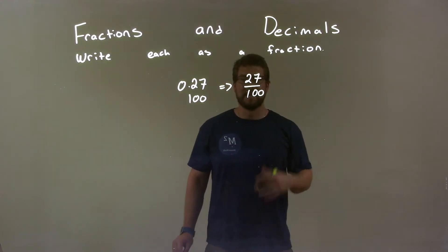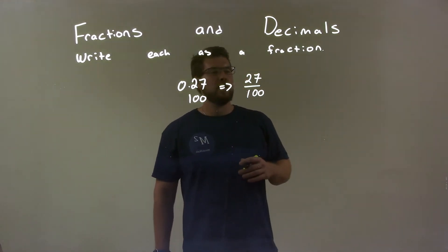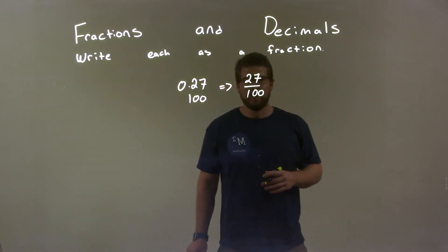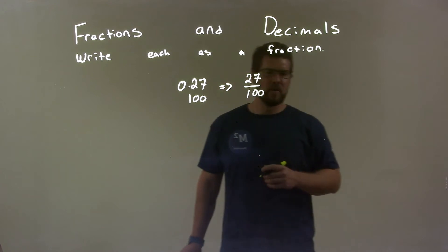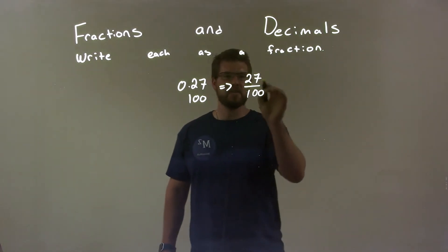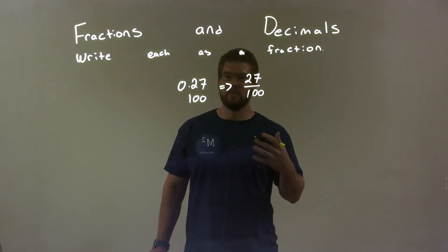So now I have this fraction, but can I simplify? Well, 27 is divisible by 3 and 9. If it's 3 or 9, it's also 3, but 3 doesn't go into 100, and there's nothing actually that goes into 27 that goes into 100 as well.